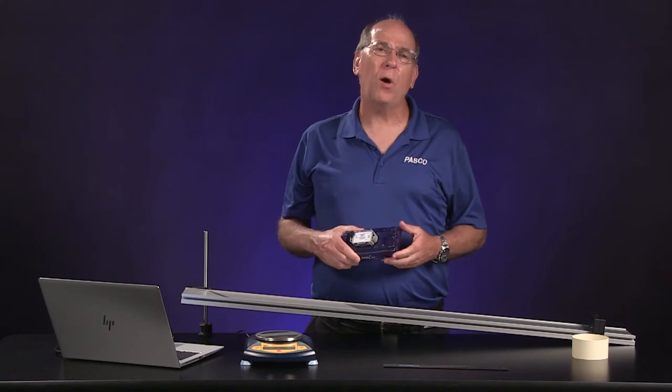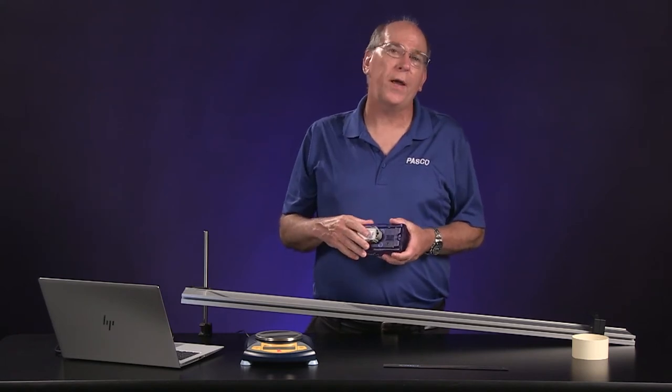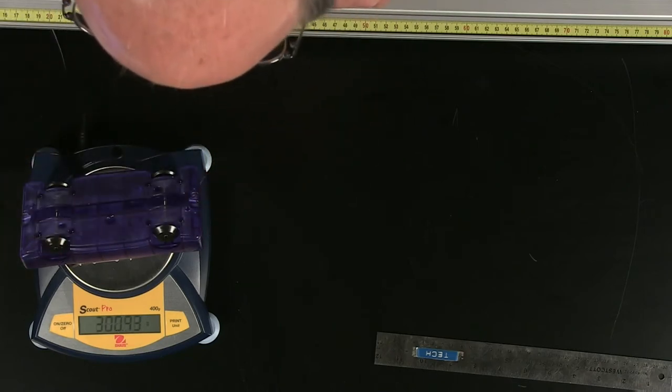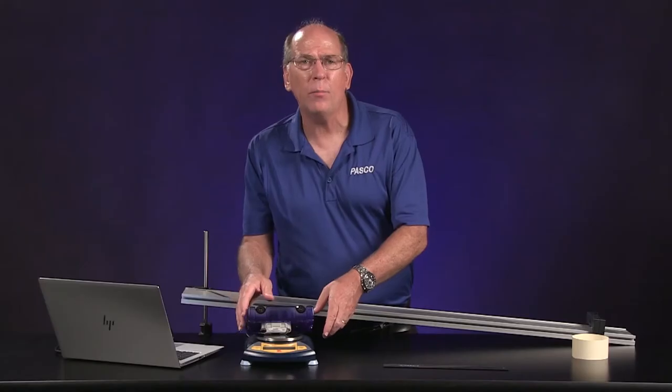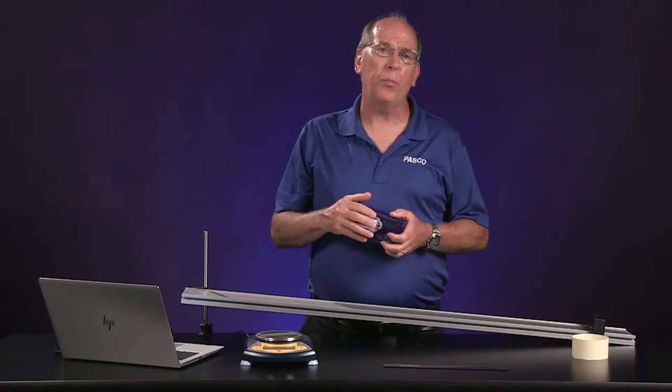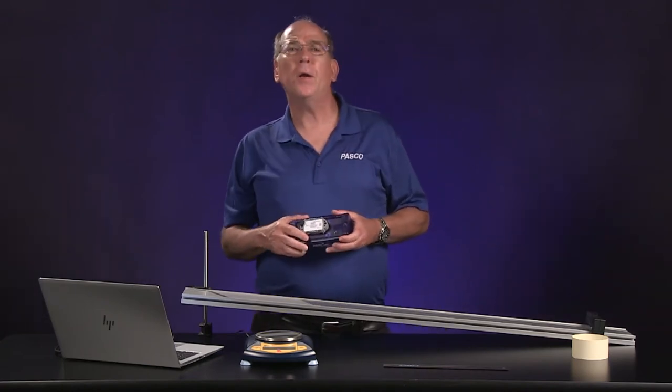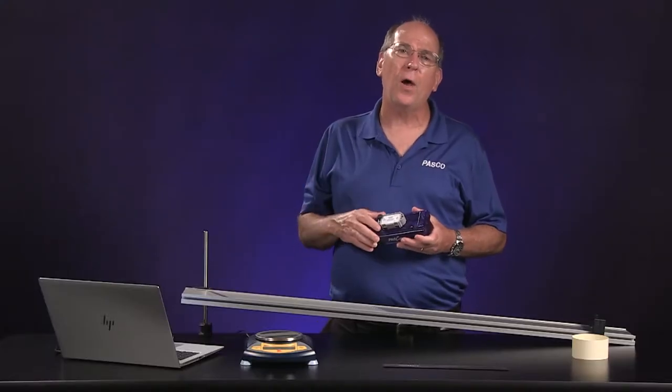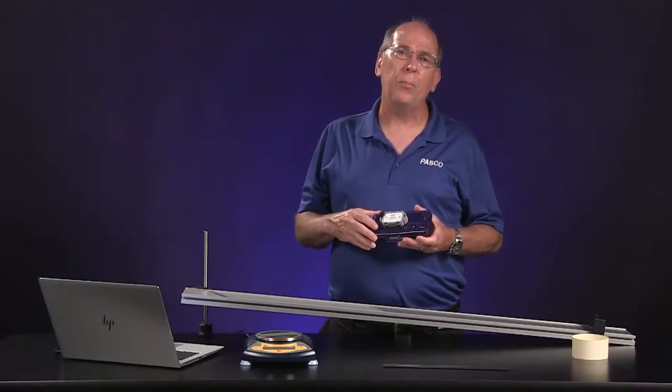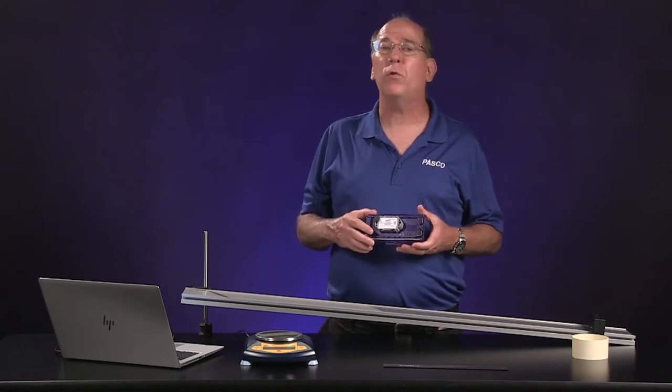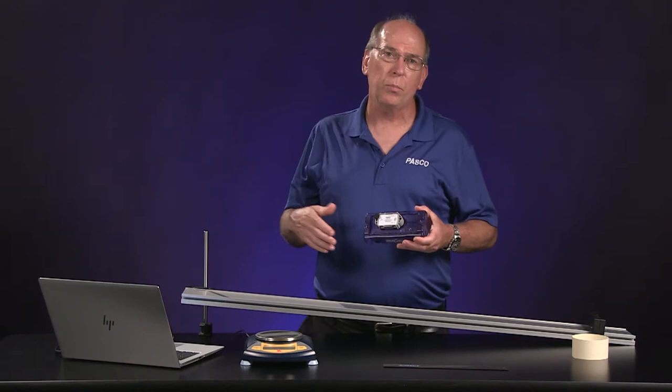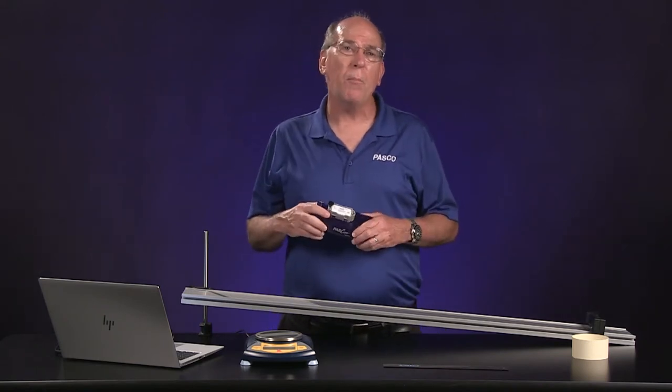We'll need the mass of the cart and the acceleration sensor later. Let's measure it before we forget. So it's 300 grams or 0.3 kilograms for both together. We've created an acceleration versus time graph display on SparkView. Since the collisions happen over a short amount of time, we've increased the data sample rate to 250 hertz. You might even turn yours up higher if you're doing this, if your computer can keep up with it.